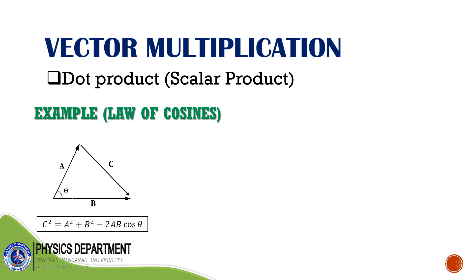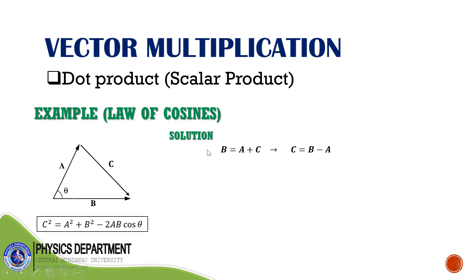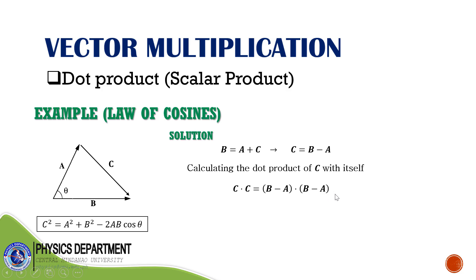Using the dot product, we can prove the Law of Cosines: c² = a² + b² − 2ab·cosθ. Using the polygon method, we can express the vectors such that a + c = b, so c = b − a. To prove this, we calculate the dot product of c with itself: c · c equals (b − a) · (b − a).